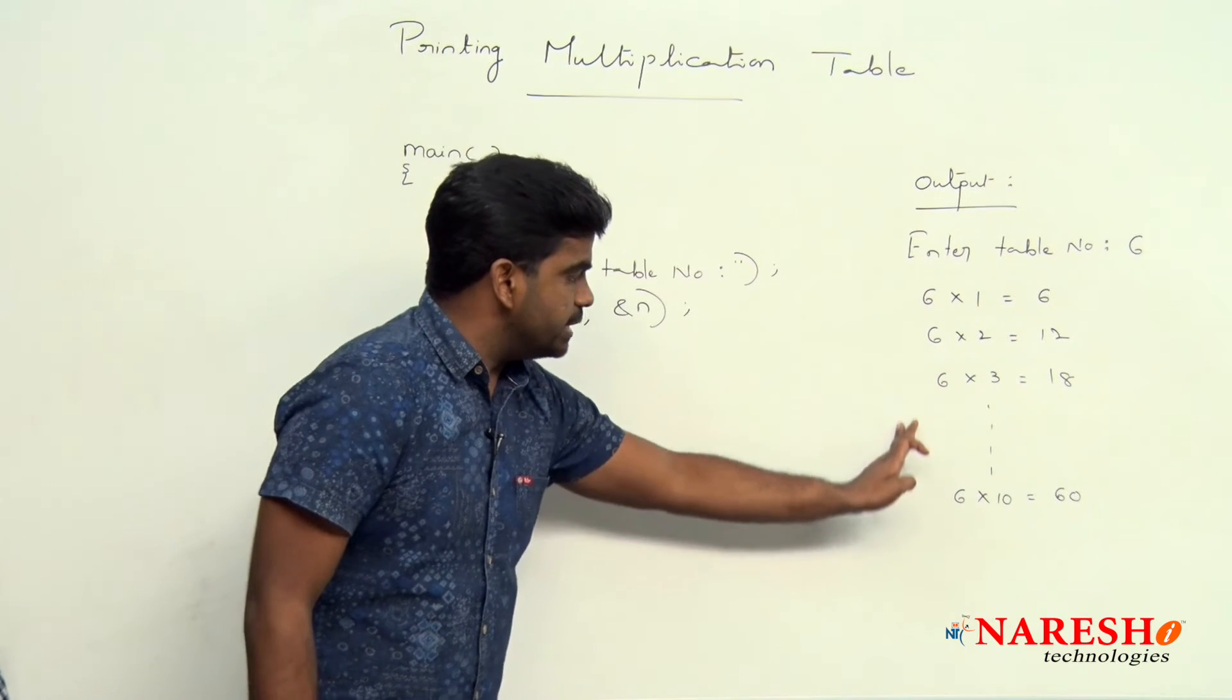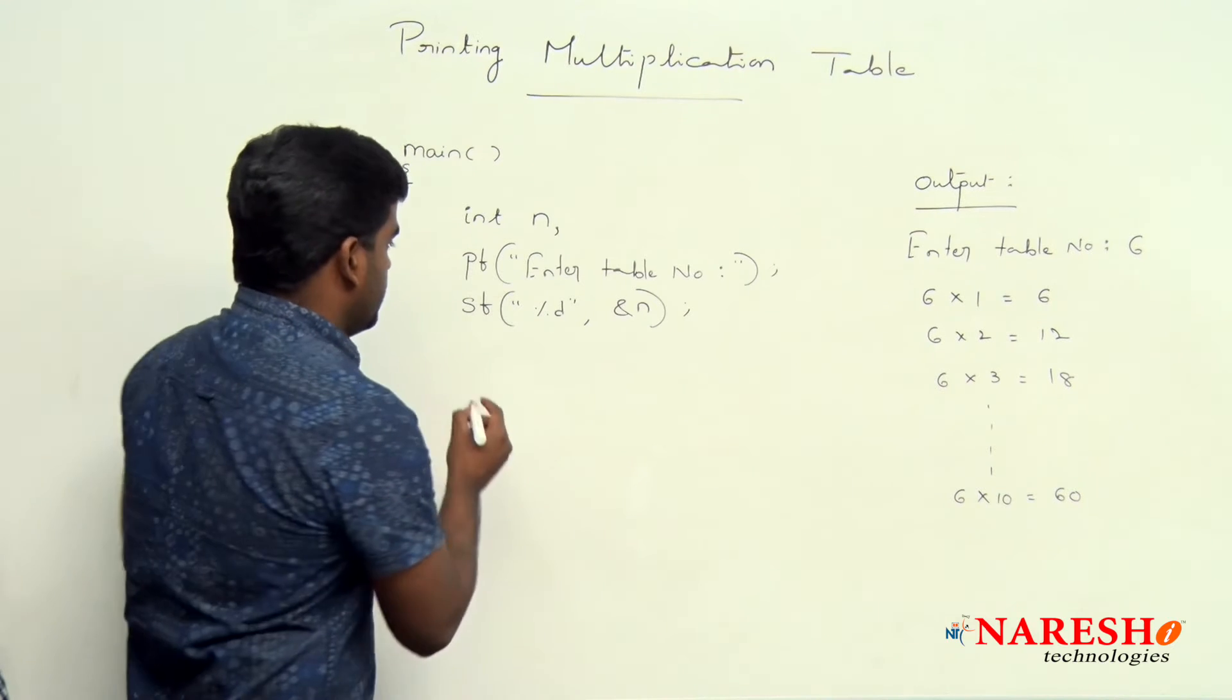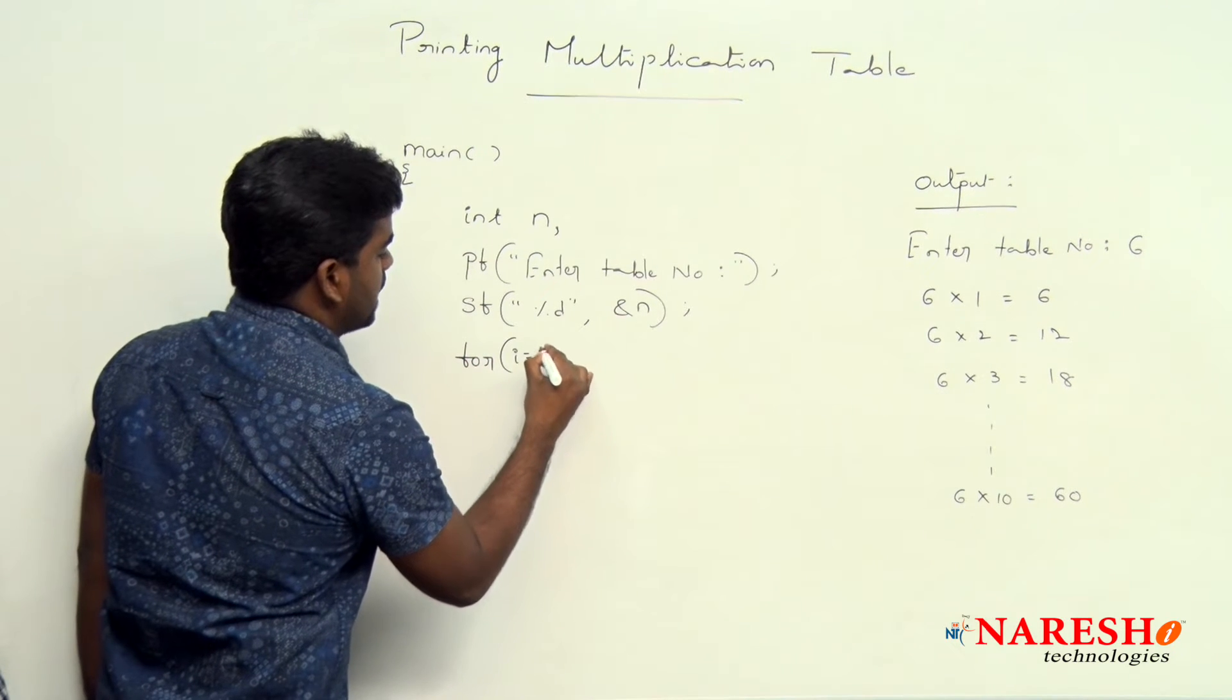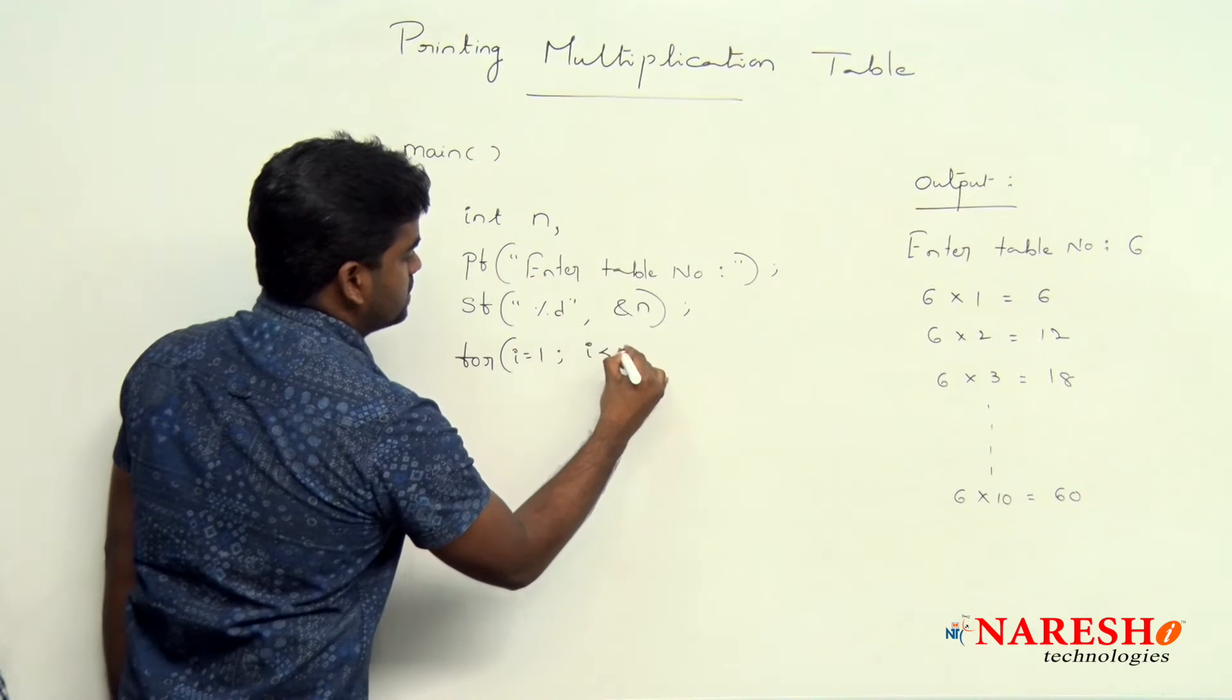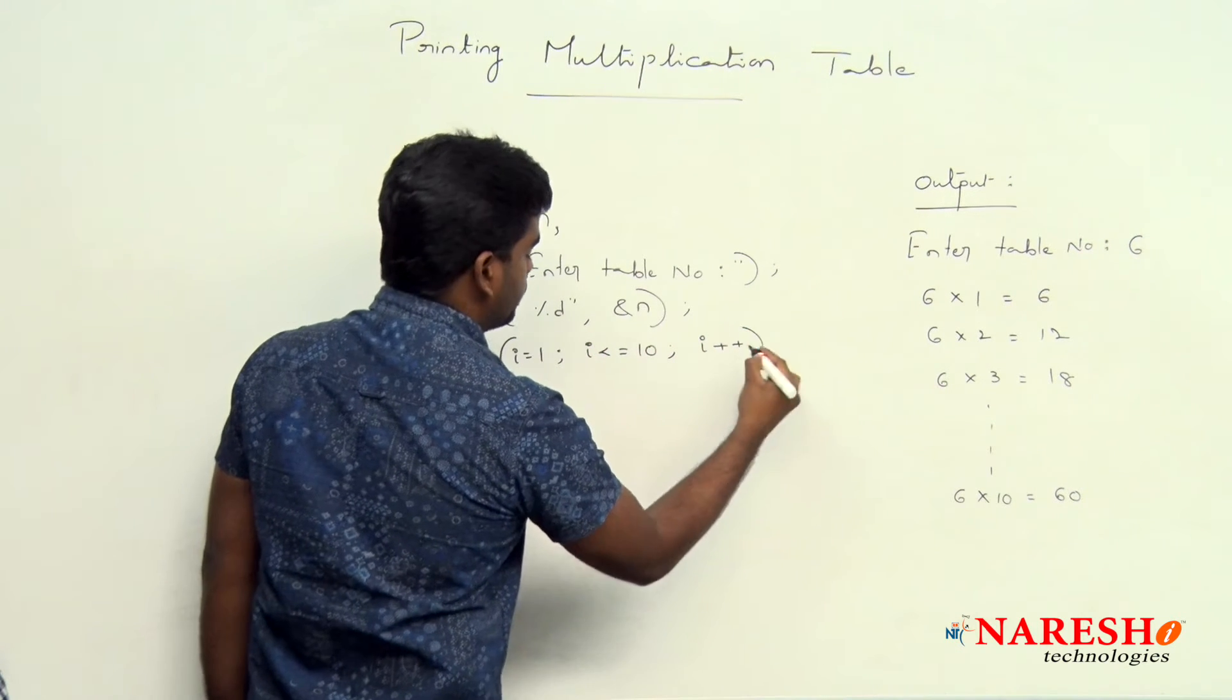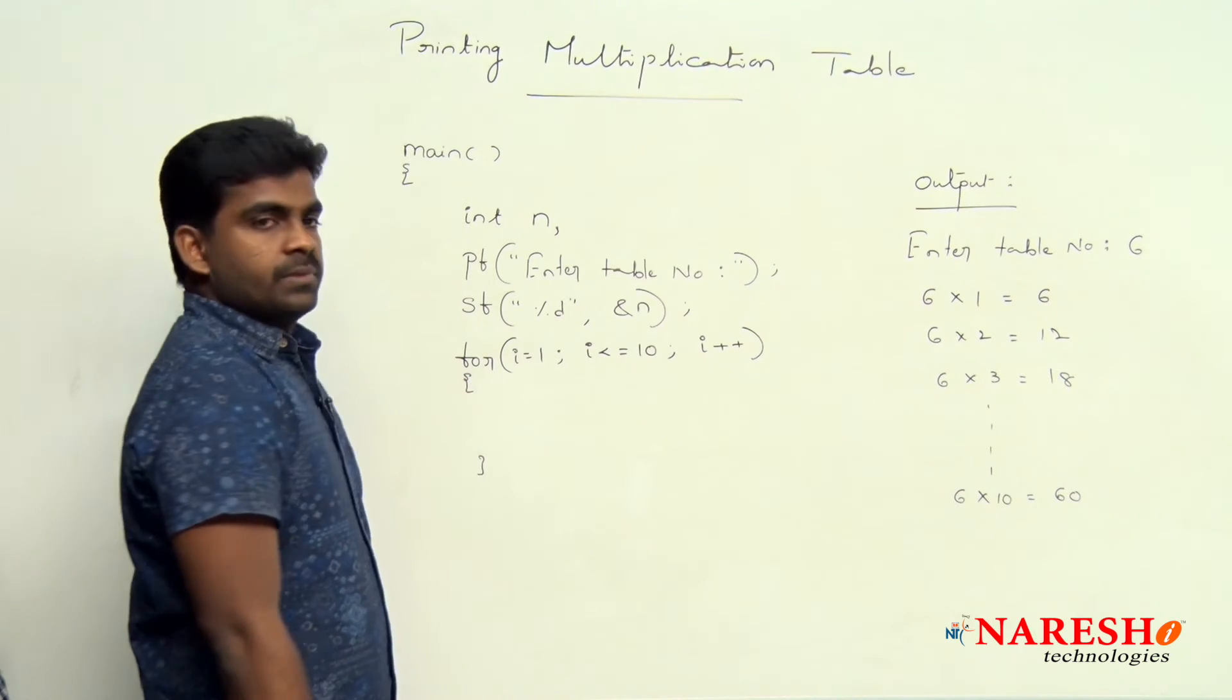How many times we need to display? Total 10 times. So we are repeating one for loop where i value starts with 1, i is less than or equal to 10, i plus plus. 10 times this loop will repeat.